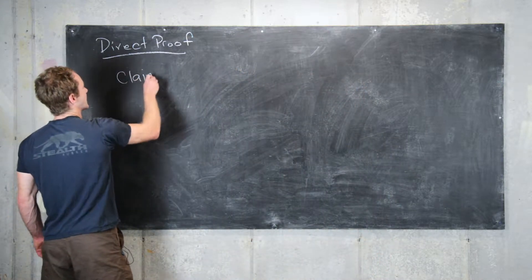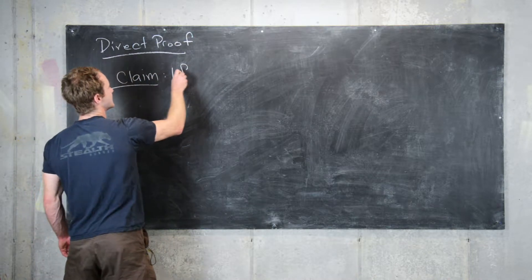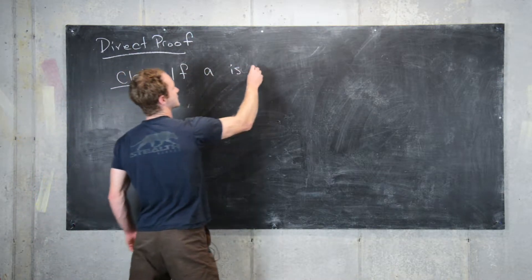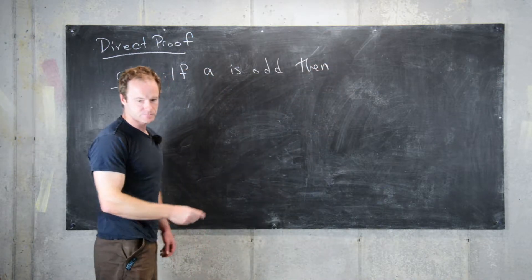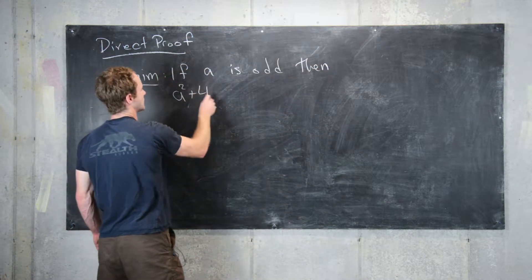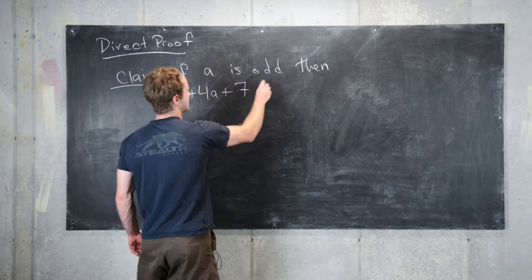The claim is that if a is odd then a²+4a+7 is even.